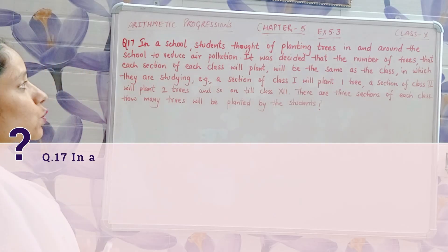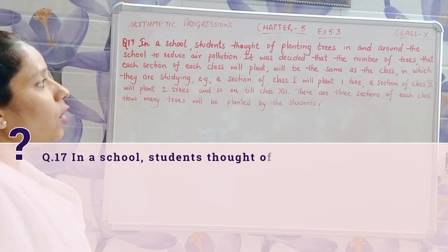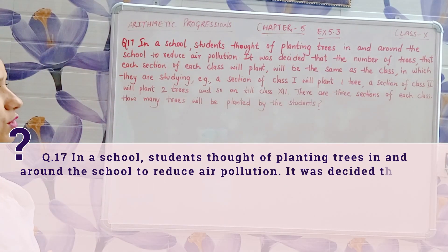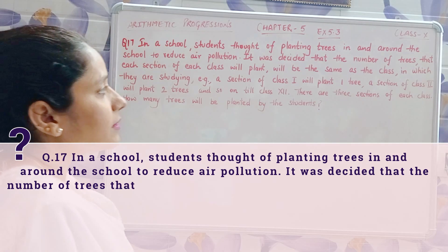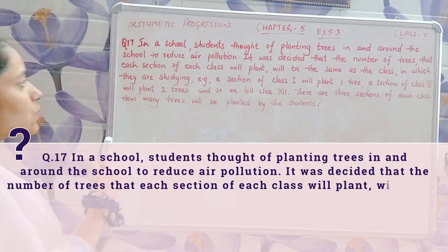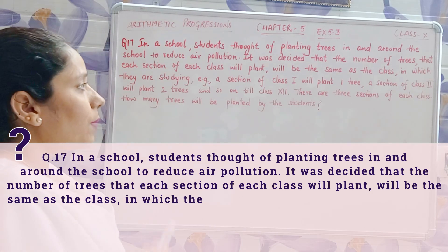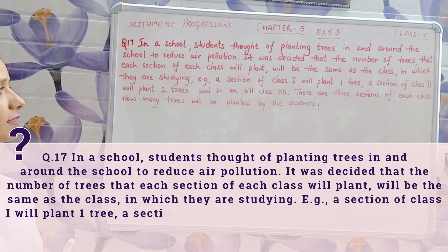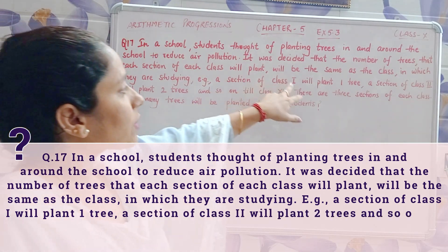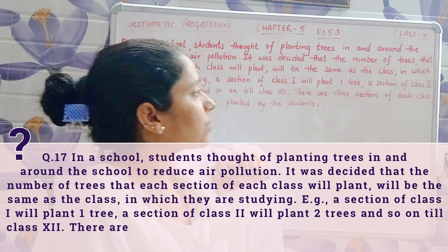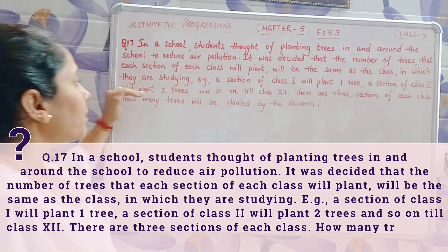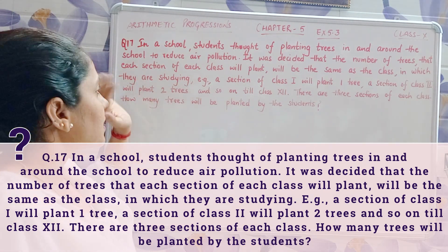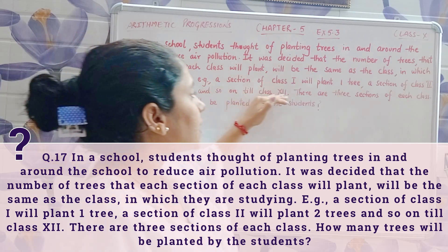Problem number 17: In a school, students are planting trees in and around the school to reduce air pollution. It was decided that the number of trees each section of each class will plant will be the same as the class number they are studying in. For example, a section of class 1 will plant 1 tree, class 2 will plant 2 trees, class 3 will plant 3 trees, class 4 will plant 4 trees, and so on till class 12.